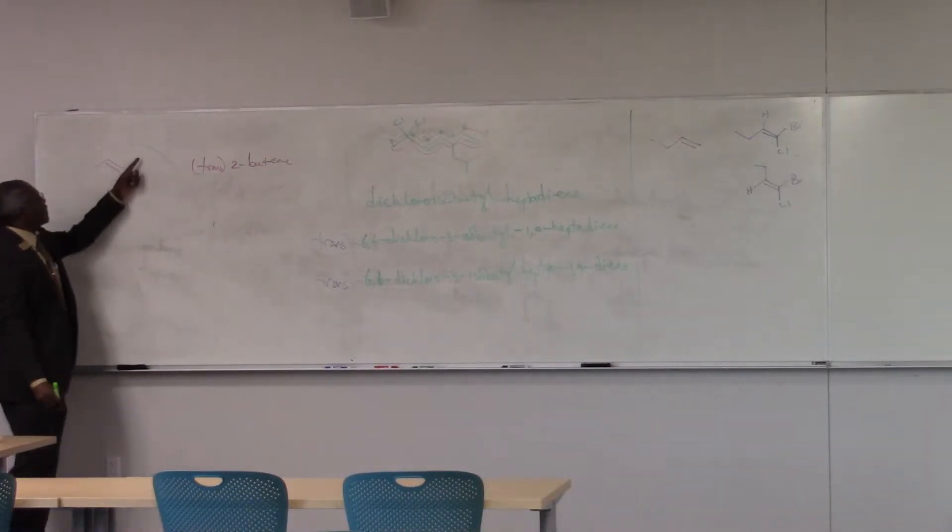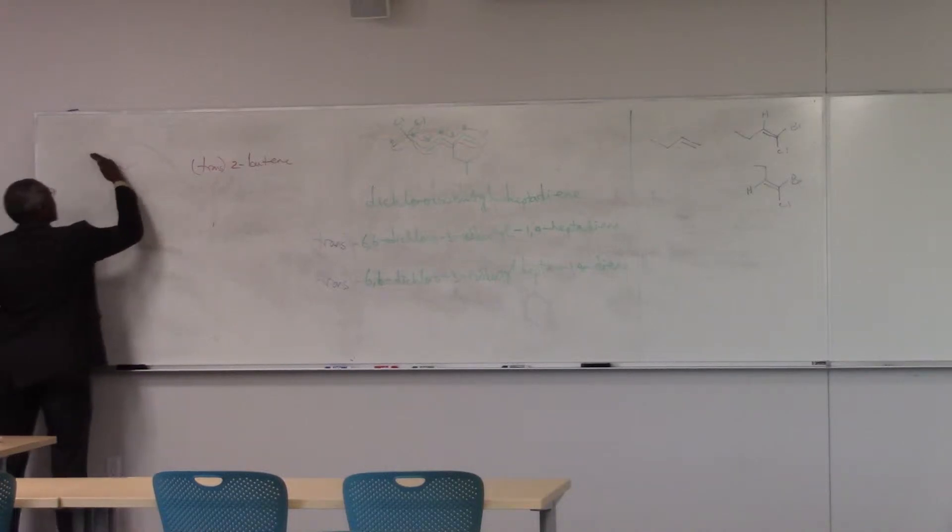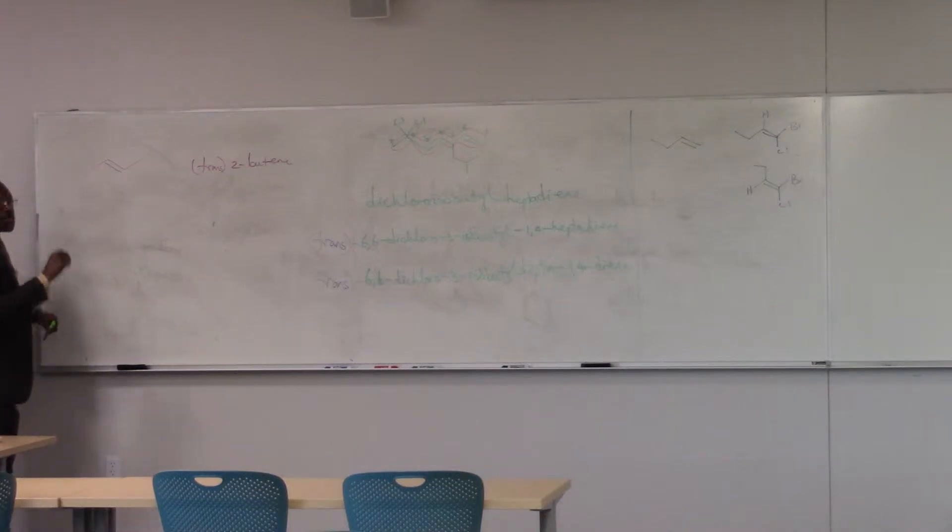Alright, so -ene, four carbons bute, the bond between carbon 2 and 3, either we number it, and it's trans, because my methyl groups are on opposite sides, my H's are on opposite sides. So that's trans-2-butene.